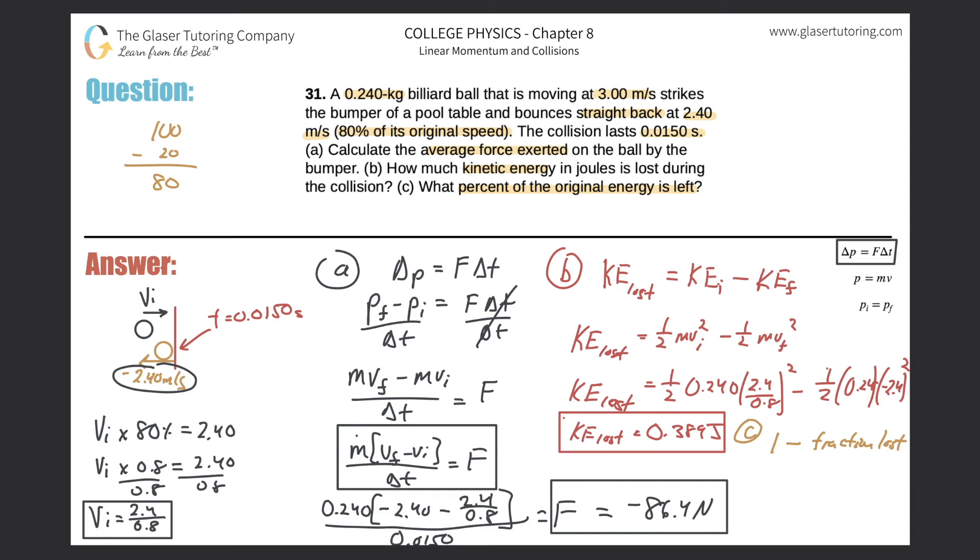So 1 minus the fraction lost will tell us the fraction left. So now what I'm going to do is take 1 minus the kinetic energy lost over the kinetic energy initial. Now plugging in the values, we know the kinetic energy loss we just found to be 0.389. We're going to divide that by the initial kinetic energy which was 0.5 times 0.24 times 2.4 divided by 0.8 squared. So I get 1.08. Now after I do the math, it's 1 minus 0.389 divided by 1.08.